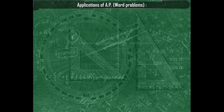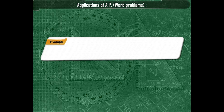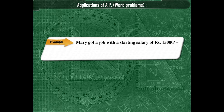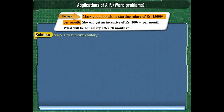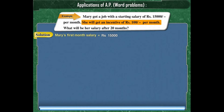Applications of AP word problems. Mary got a job with a starting salary of rupees 15,000 per month. She will get an incentive of rupees 100 per month. What will be her salary after 20 months? It is given that Mary's starting salary is rupees 15,000 and she gets an incentive of rupees 100 per month.